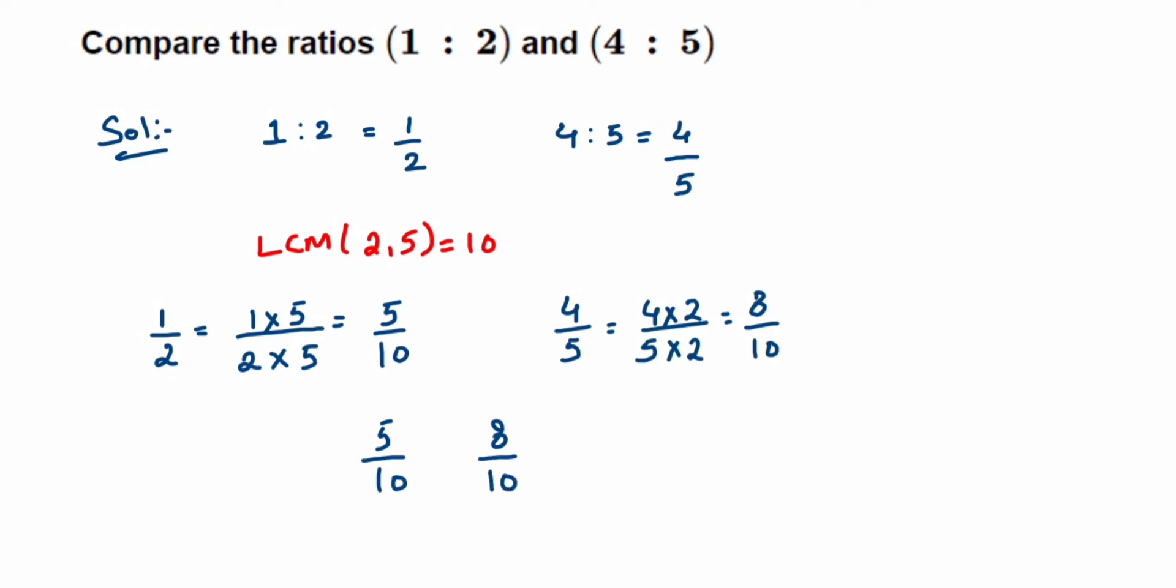When denominators are the same, this means it's a like fraction. In like fractions we compare the numerator. Greater numerator means greater fraction or greater ratio in this case. So 8 is greater than 5, so 8 upon 10 is greater.